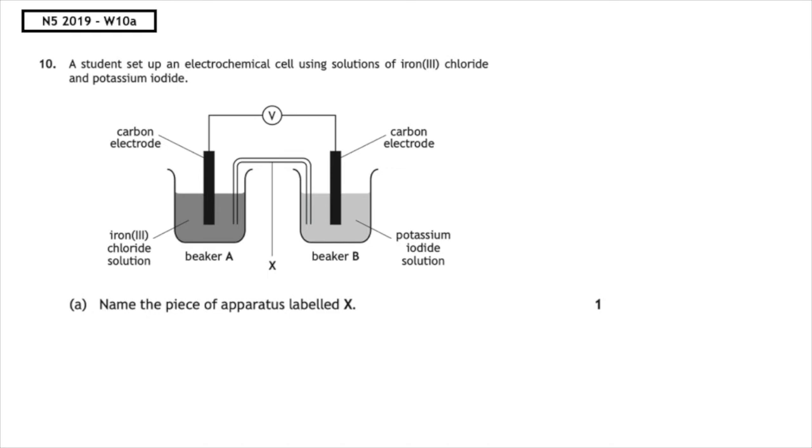This past paper question is from the National 5, 2019, written 10A. A student set up an electrochemical cell using solutions of iron 3 chloride and potassium iodide. Name the piece of apparatus which is labeled X. We have the part which connects both of the solutions together and that is known as an ion bridge.